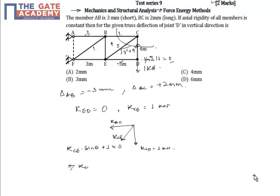So KCE is equal to minus 5 by 4. Similarly, KBC can be written as minus KCE cos theta, which would be plus 0.75.